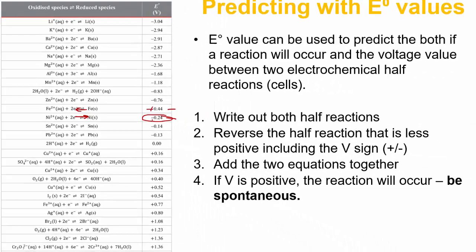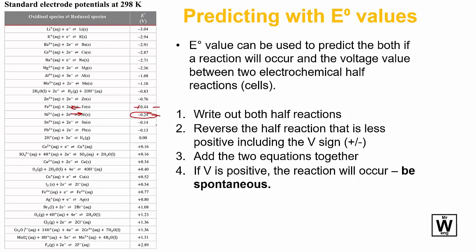You then add the two together. That'll give you around 0.2. So that's the voltage there. It's also positive. And so you'll actually have this one occur. So that'll be spontaneous.